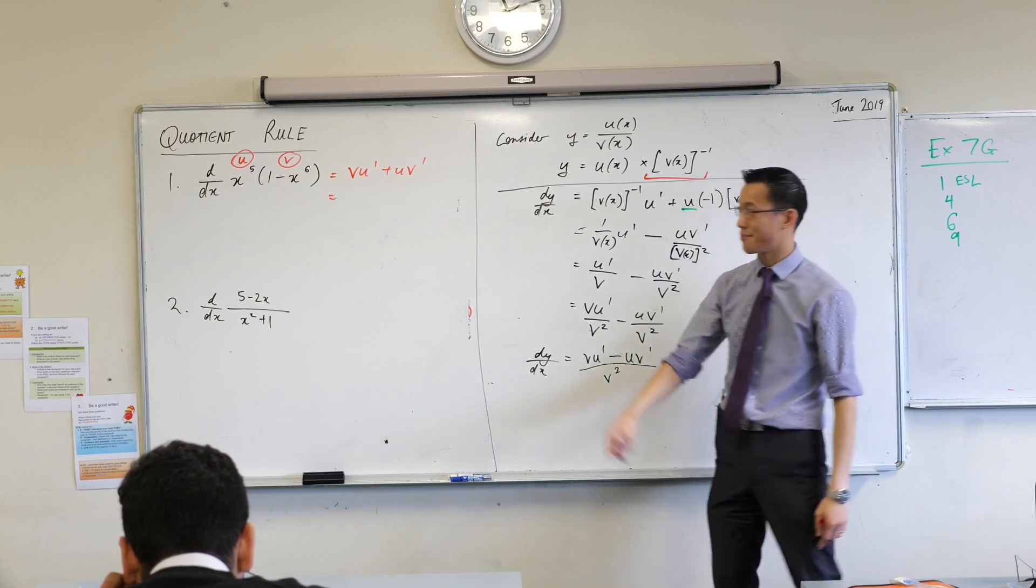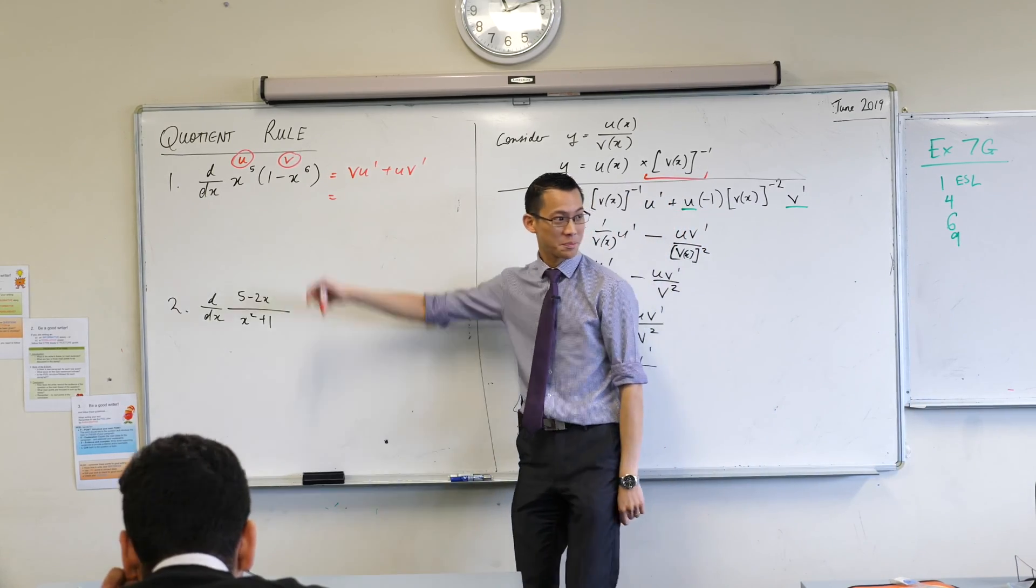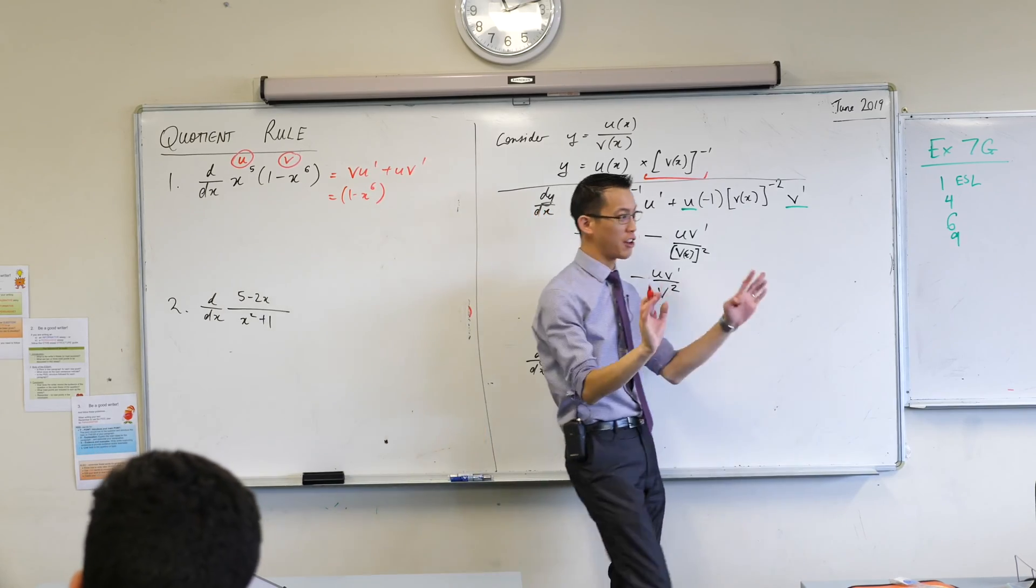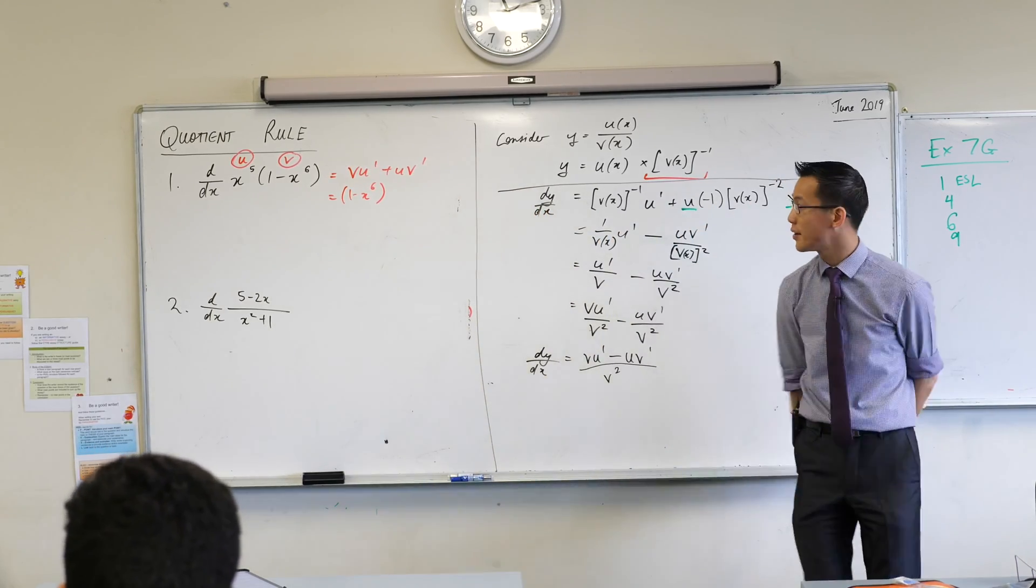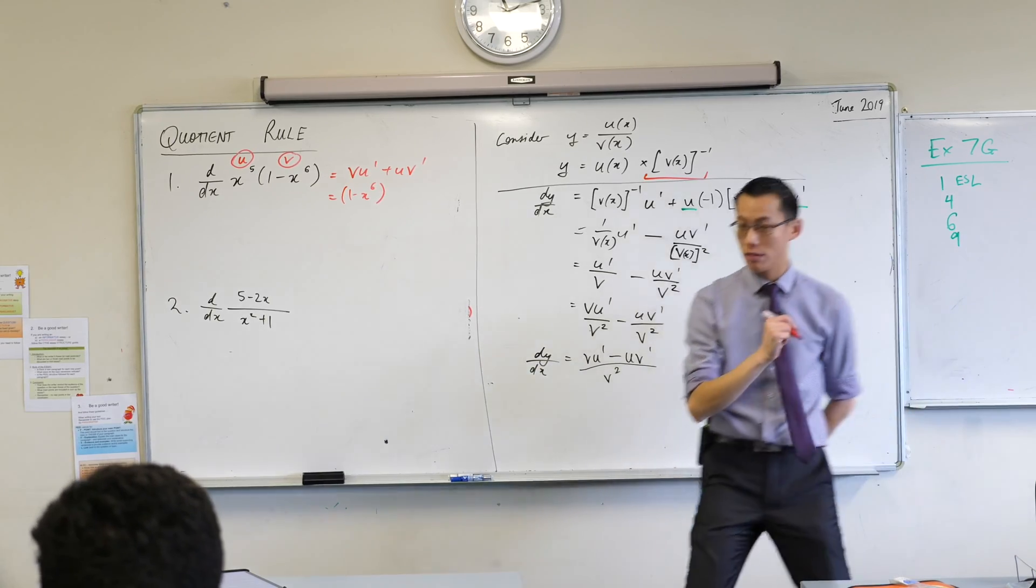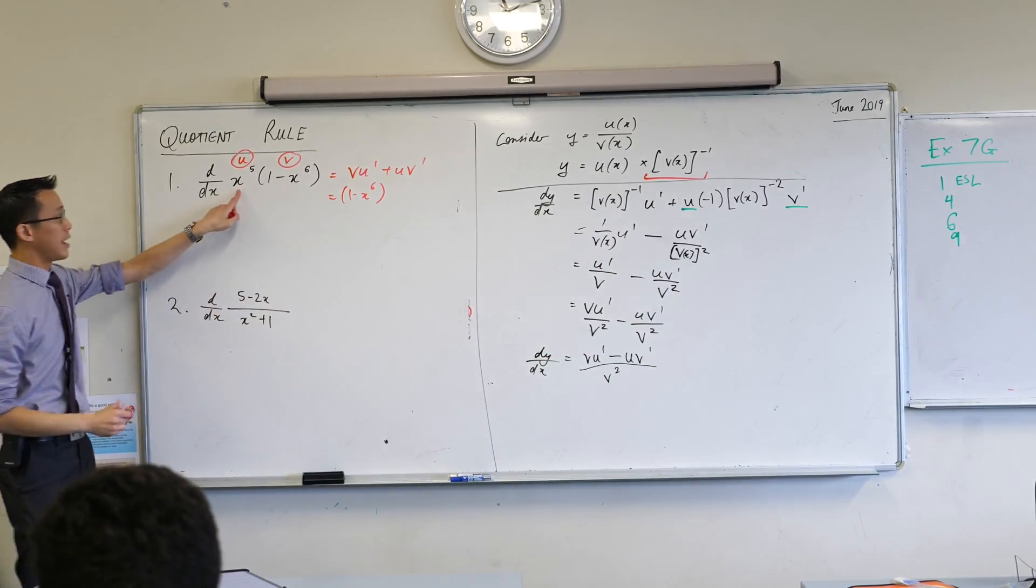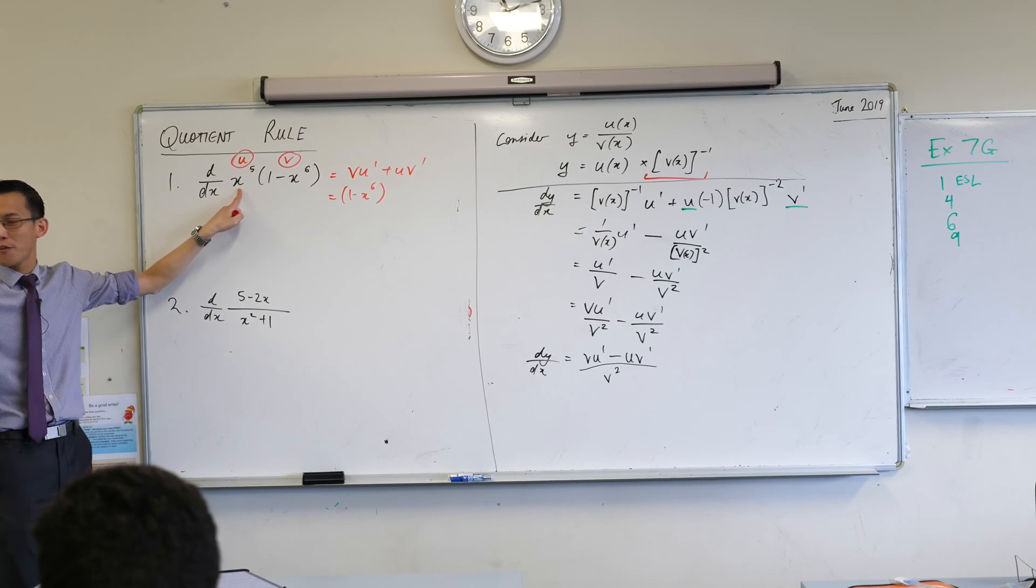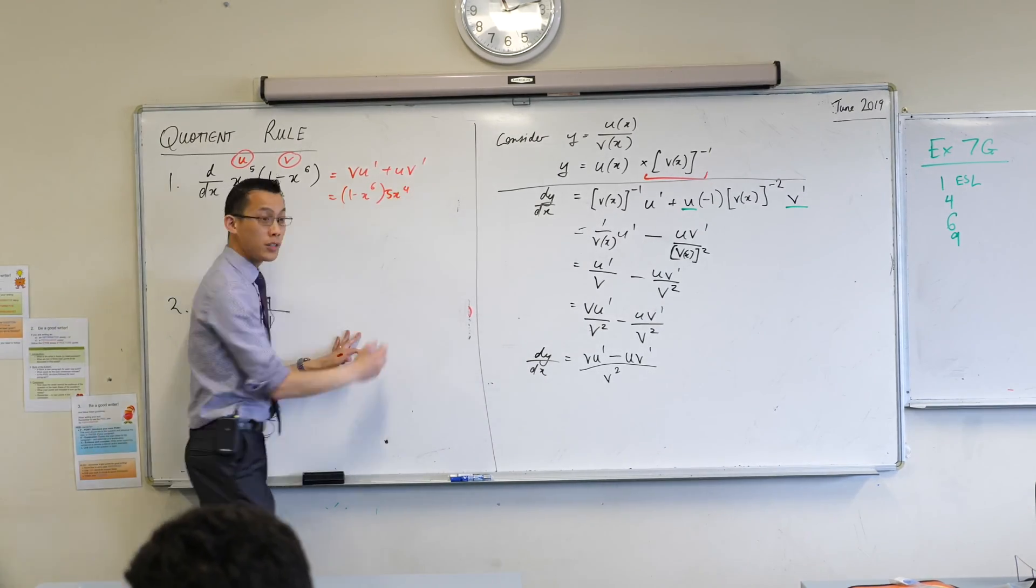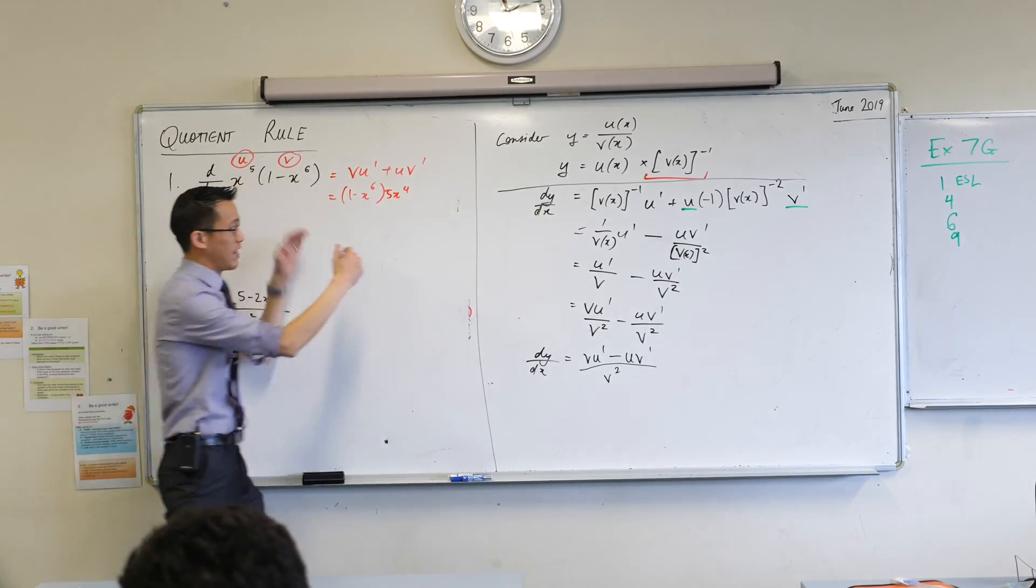Now that I've got my u and my v designated there, I know my product rule is going to use those in this way, v u' + u v'. Let's begin from the top. So what's v in this case? 1 minus x to the power of 6. There it is, done. I don't have to do anything, just write it down. The next thing along in the product rule is u'. Let's have a look, u' over here. Here's u, so u' will be 5x to the 4.